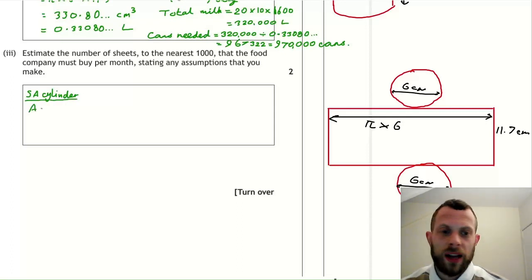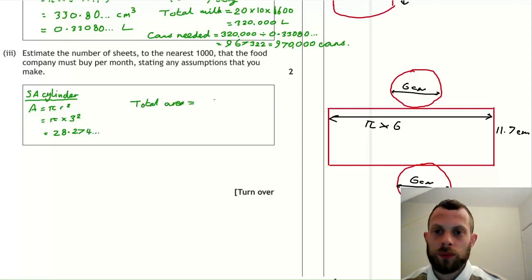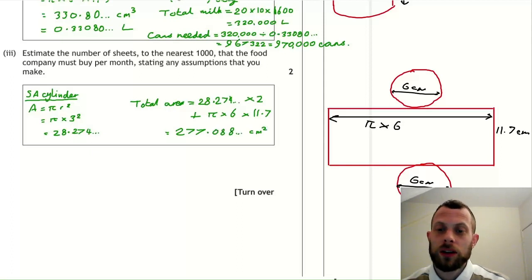So let's get on with this. I would like to put headings to keep my work organized. So first of all, one circle pi r squared. Again, you should know that. Now we have two of them, a top and a bottom, so we need to multiply that by two. And we also need to add on the rectangle, pi times 6 times 11.7. Put all of that into a calculator and you will get 277.088 square centimeters.